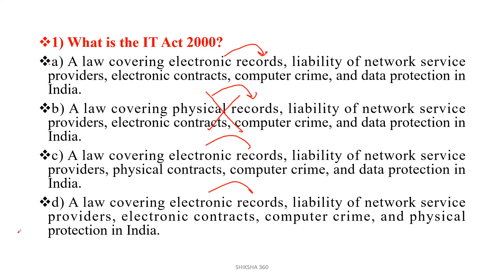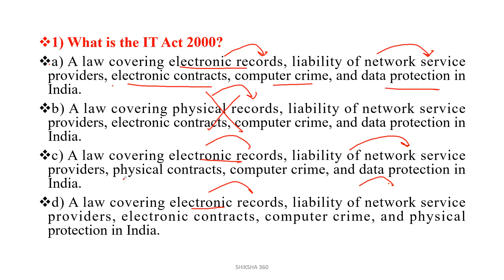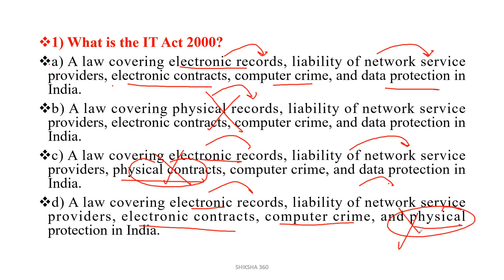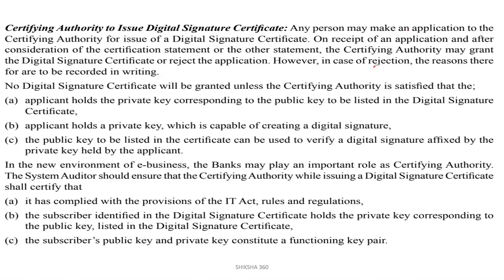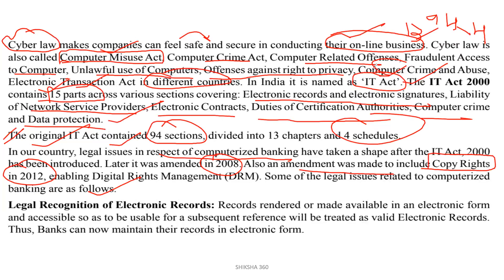The options for 'What is IT Act 2000' include: a law covering electronic records, liability of network service providers, electronic contracts, and computer crime and data protection in India. One option replaces electronic contracts with physical contracts — that has no relation, so option C is eliminated. Another replaces data protection with physical protection — that is wrong too. It is basically data protection in India. So option A is the correct answer.